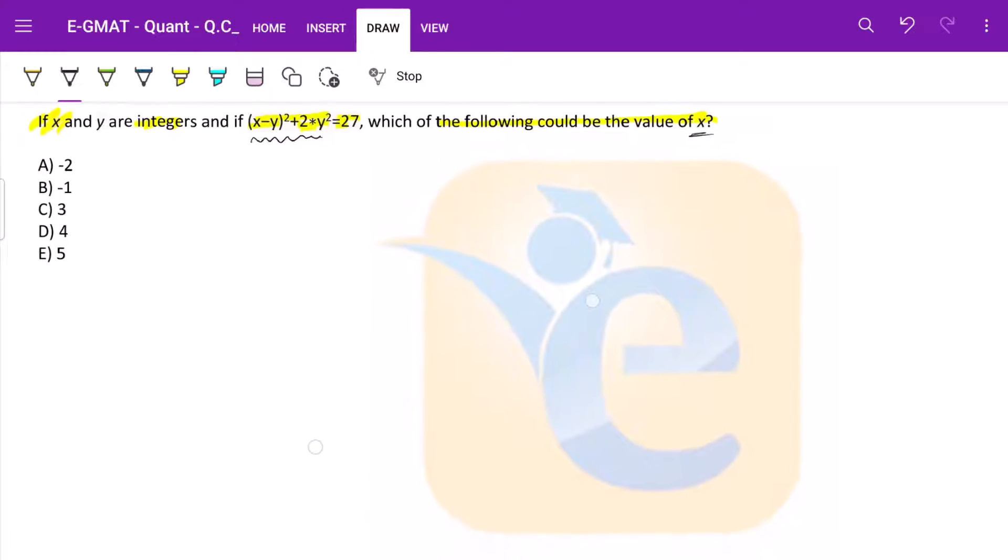In this type of question, what becomes of utmost importance is how much inferences can you draw actively. So, let us see. Now, right after this step we will take out some inferences.